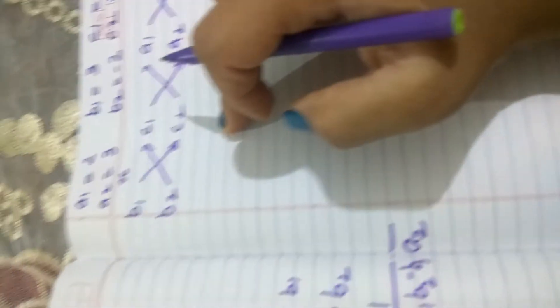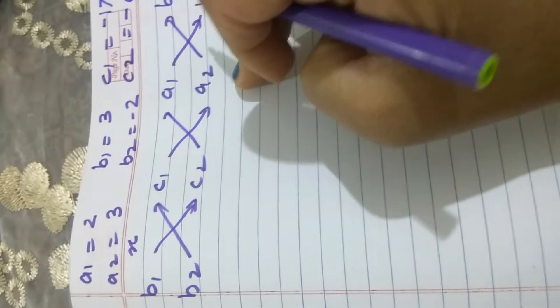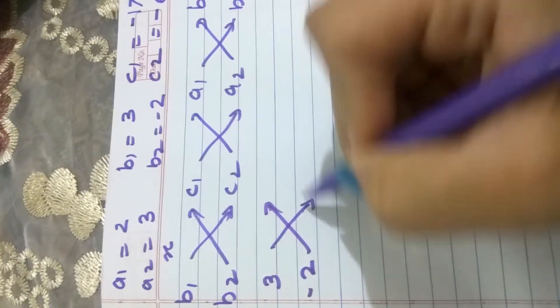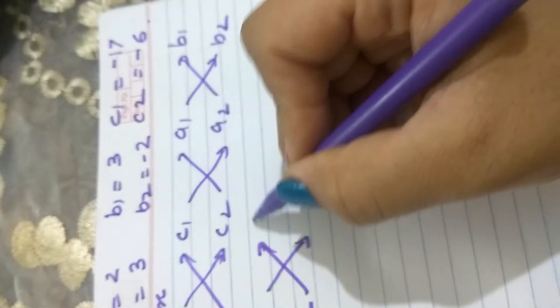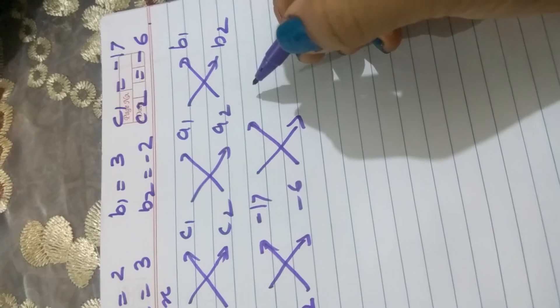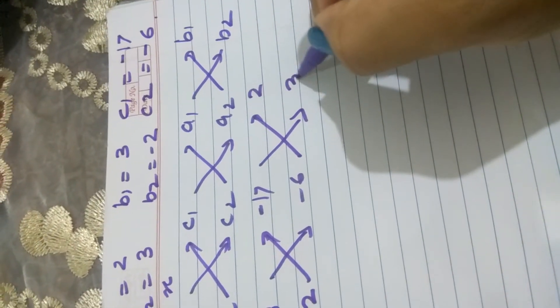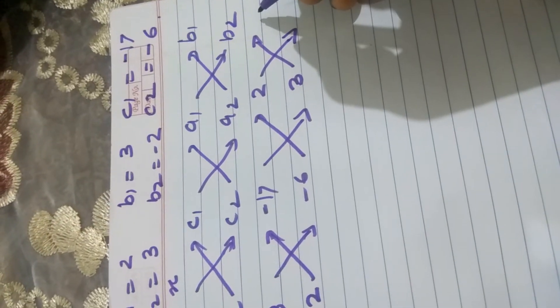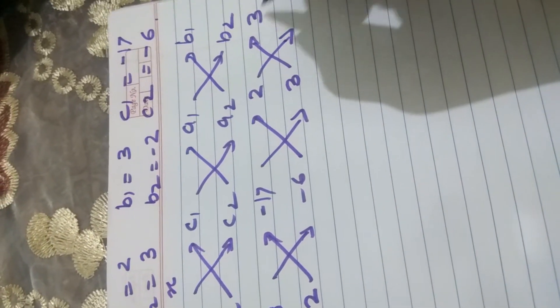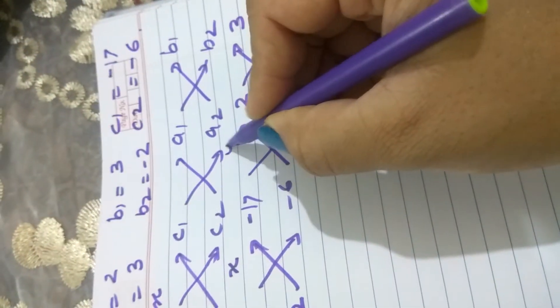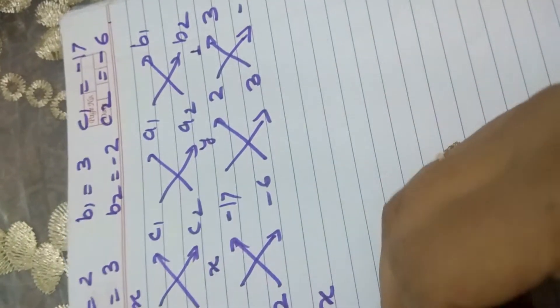By copying the values, after drawing this pattern, I will copy down the values from here. b1, b2 means 3 and minus 2. And then I have c1, c2 means minus 17 and minus 6. After that, I have a1, a2, so that will be 2 and 3. And then again at the end, I have b1, b2, so that will be 3 and minus 2. This I have to take below x, this below y, and this below 1.